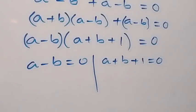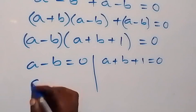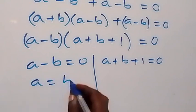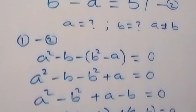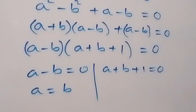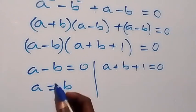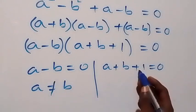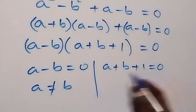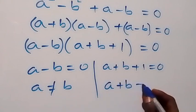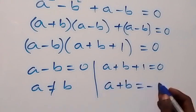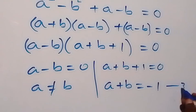Now, a minus b equals 0 implies a equals b. But since we are told that a is not equal to b, that case is rejected. On the other side, taking 1 to the right, we have a plus b equals minus 1. Let's label this as equation 3.